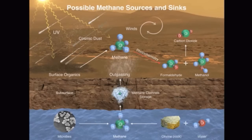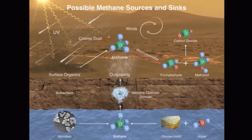In the presence of liquid water, methane can be generated by biology or geology. In the past, when Mars was wetter and warmer, these kinds of processes could have taken place.